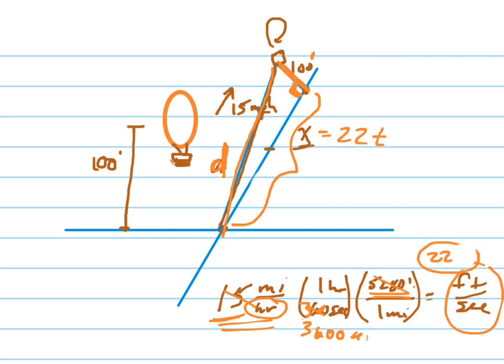So the question said to find an expression for its distance, that's this right here, from the intersection t seconds later. So we're just going to use Pythagorean's Theorem. We know that 22t squared plus 100 squared, leg squared plus leg squared equals d squared.